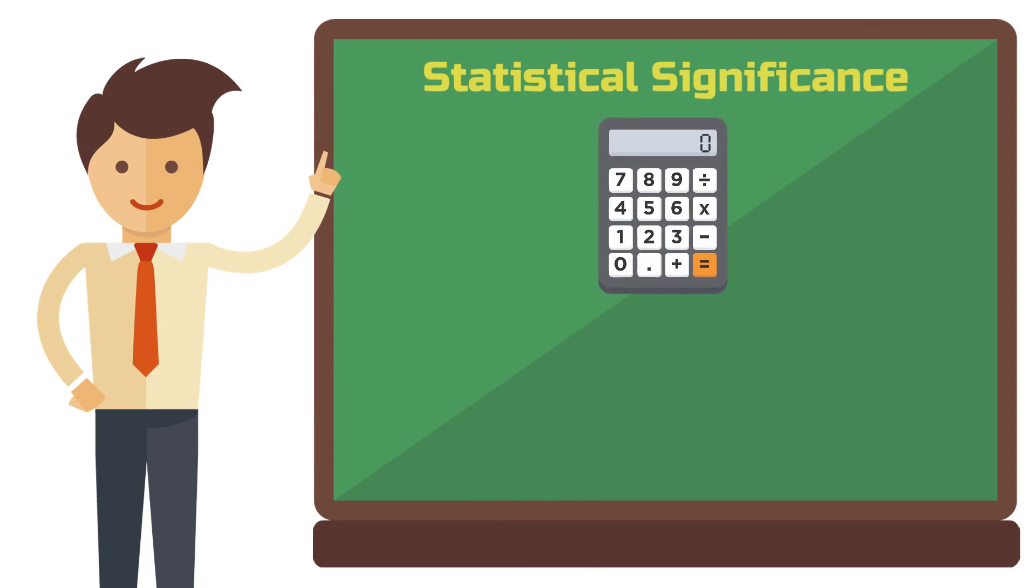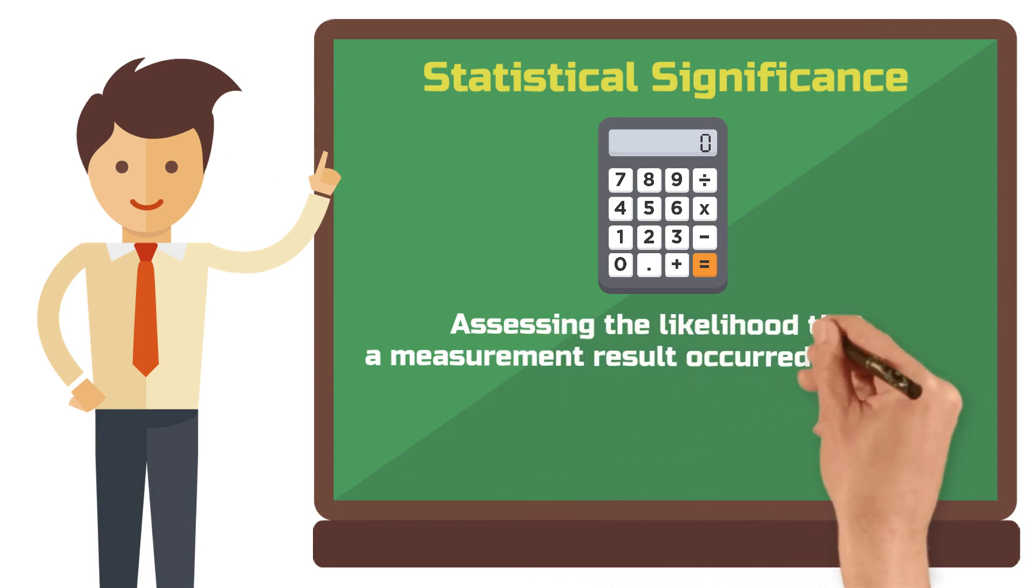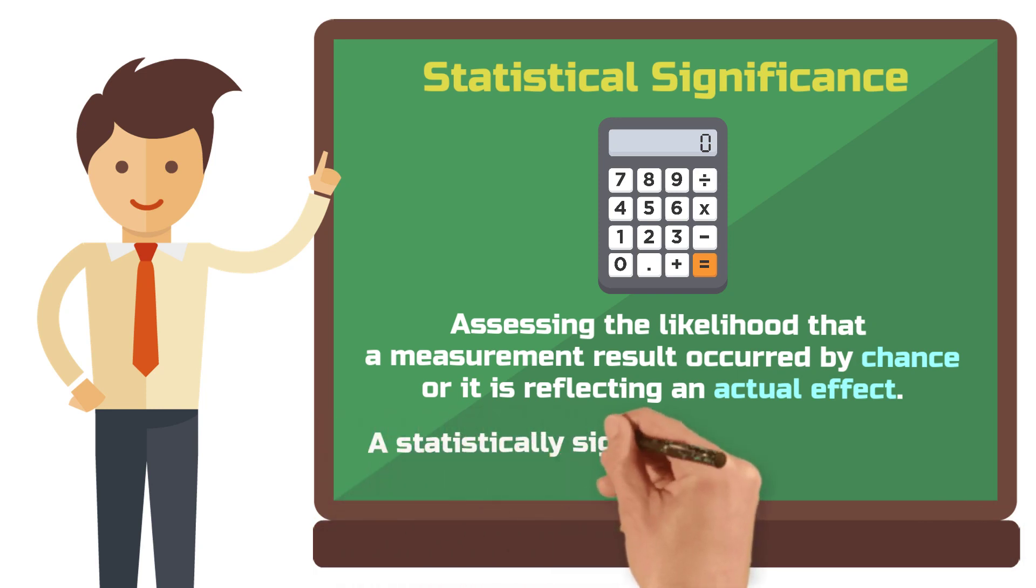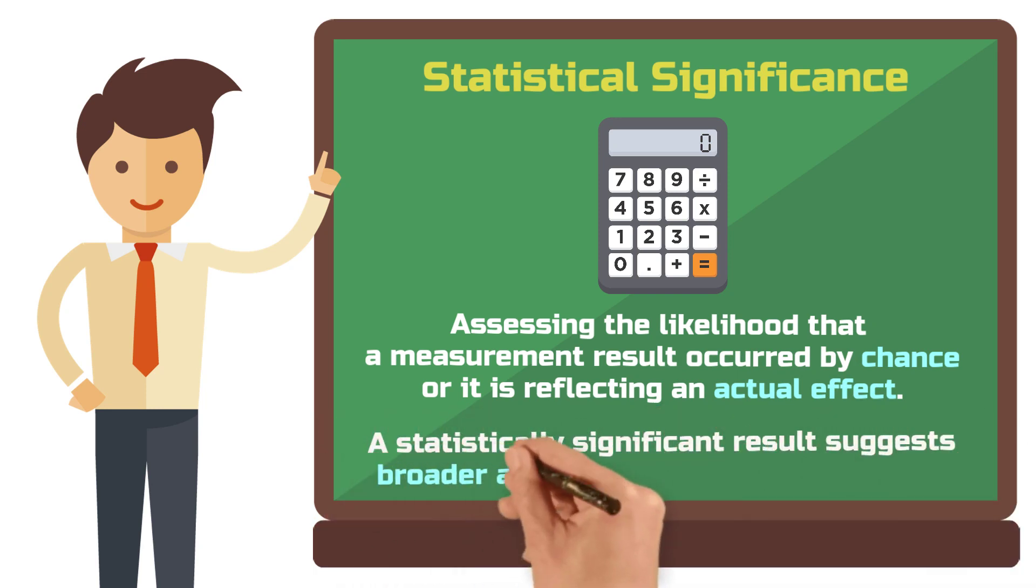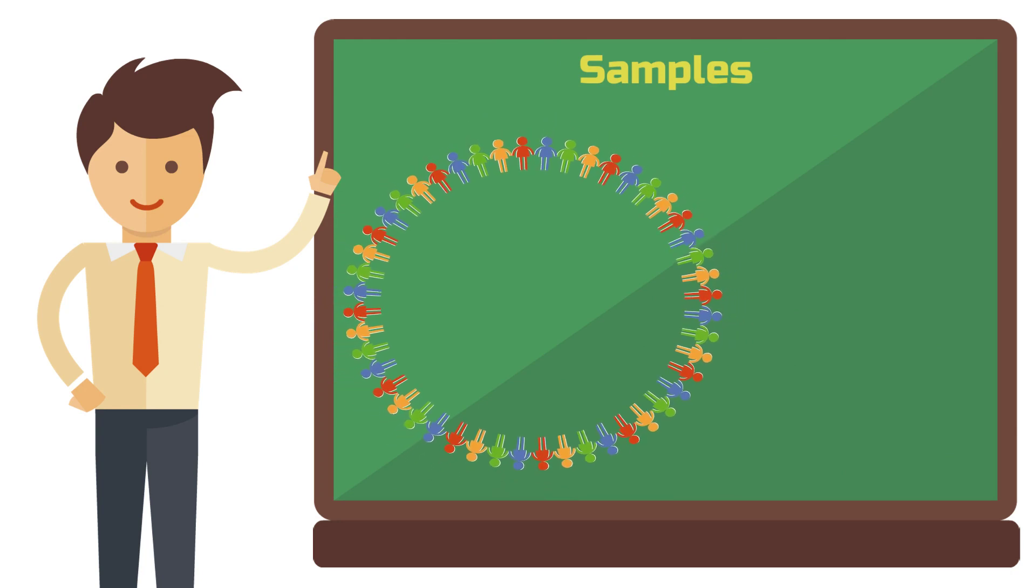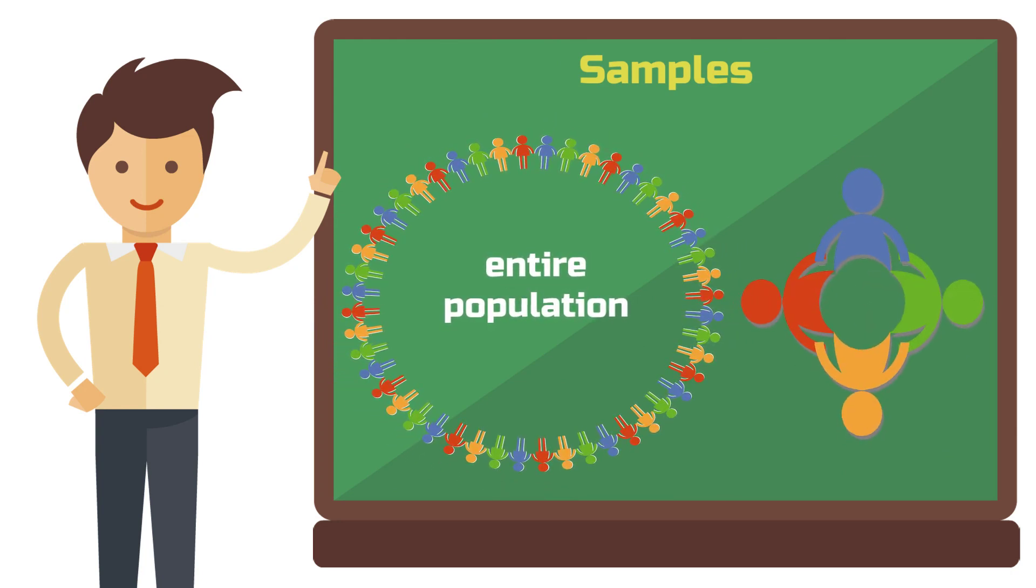Statistical significance helps us determine the likelihood of a measurement result occurring by chance versus indicating a real effect. If we deem a result statistically significant, it suggests that the result from the analysis of our sample might also apply to a wider population. Typically, studies are not conducted with all individuals representing a specific group, that means the entire population.